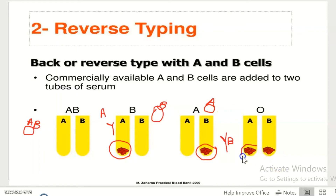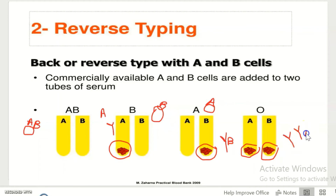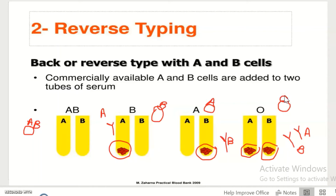If you see agglutination in both A and B tubes, it means the patient has both A and B antibodies. As the patient has both A and B antibodies in their serum, it means they don't have A or B antigens on their RBCs. That's why he or she is group O.